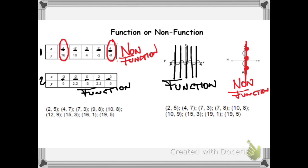Now when we're looking at a set of points, we're going to do something similar to the tables — we're going to focus on our x values. In my first set of points, my x values are 2, 4, 7, 9, and 10. None of them are repeated, so the possibility of the same x value being paired with different y values doesn't exist. So this is a function.